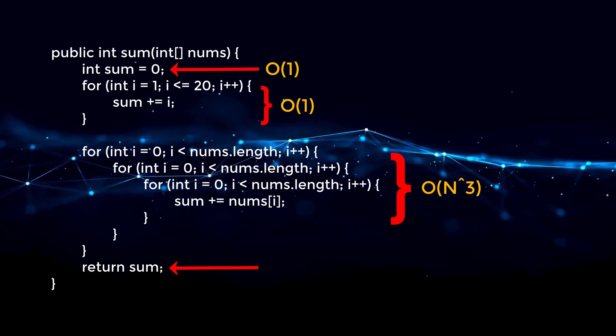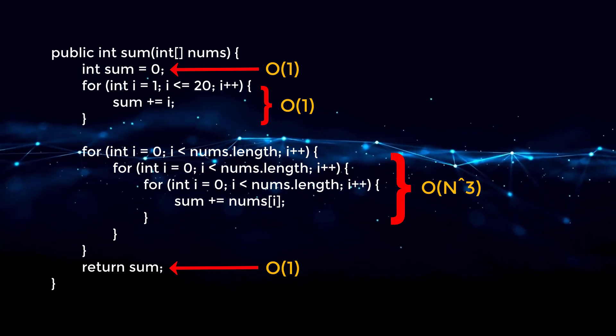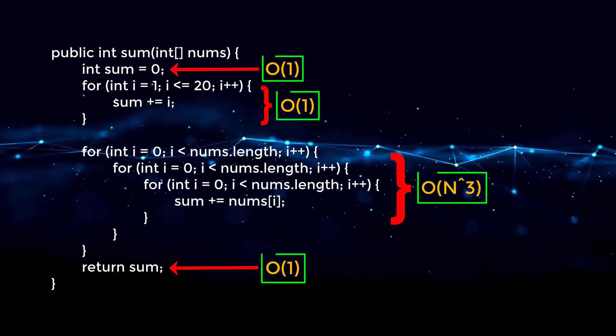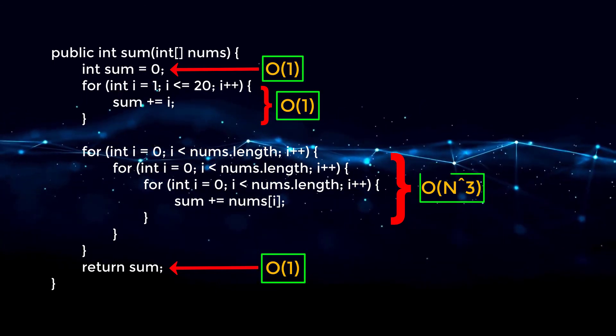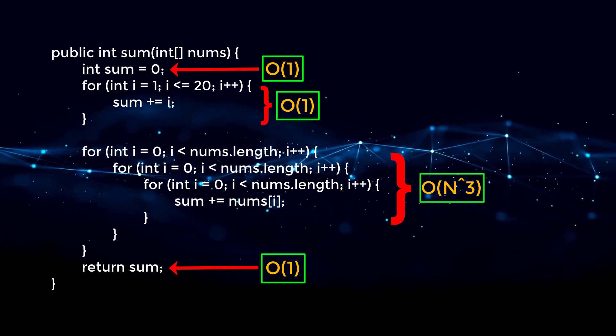And then outside of these nested for loops, we're just returning our sum, which is just going to take constant time. And now we are just going to add up all of these terms together. And Big O of n to the third is the dominant term. So that would be the final complexity.